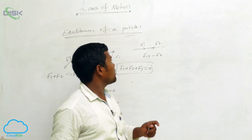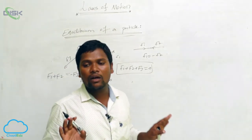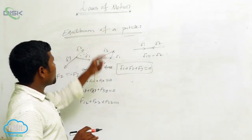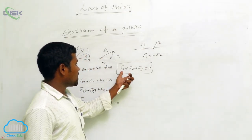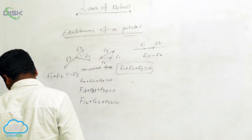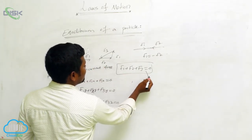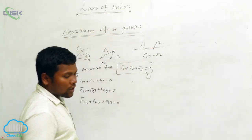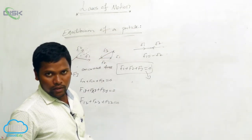Sometimes they may be in equilibrium position, sometimes may not. Equilibrium position means they all should be at one place — if you apply an external force and there is no movement, then we can say that is the equilibrium of the particle. If net force is 0, then F1 plus F2 plus F3 equals 0, and the particle will be in equilibrium position.